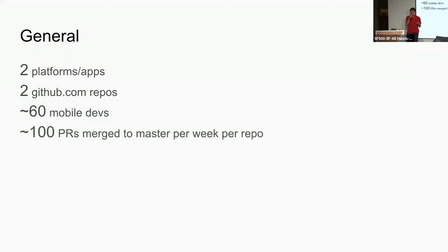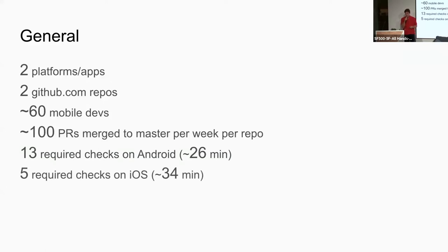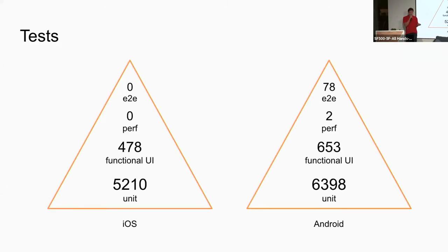The previous speaker talked about the scale Strava had — we have about 2x of that, so roughly a hundred PRs merged to master per week per repo. We run 13 required checks to merge your change into Android, which takes about 26 minutes. There are five required checks on iOS taking 34 minutes. Our developers thankfully write tests — I was just updating the slide today and noticed the huge amount of progress iOS had made. They're really catching up to Android, which is great to see.